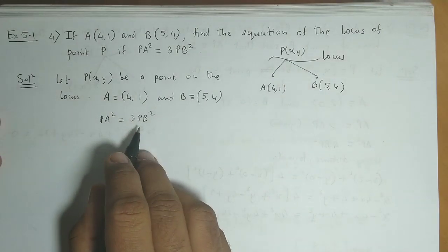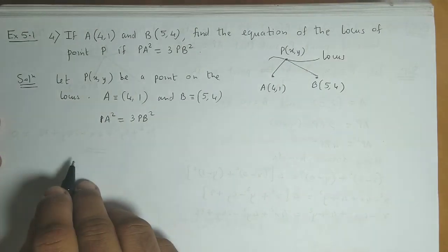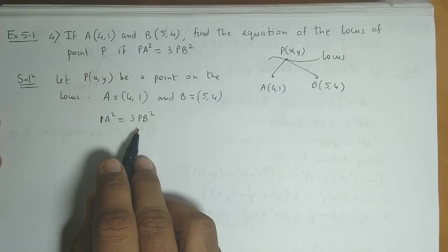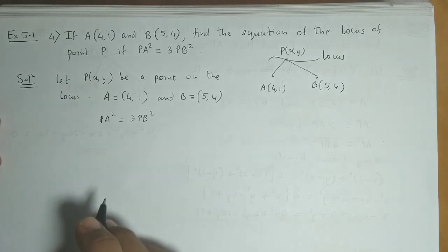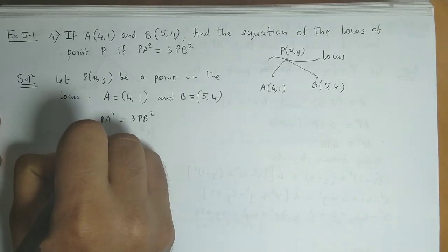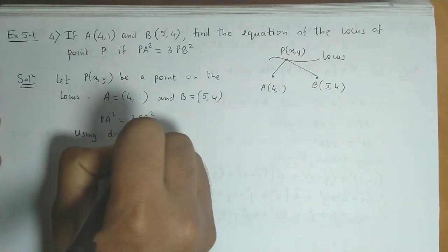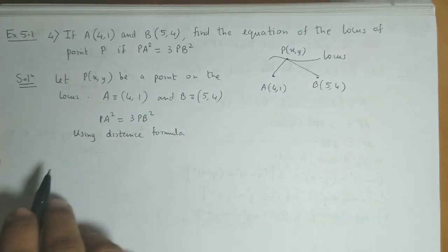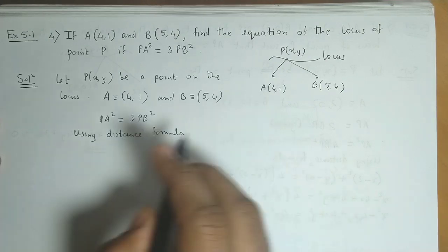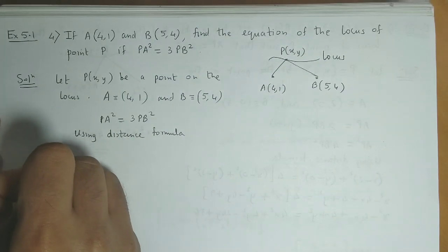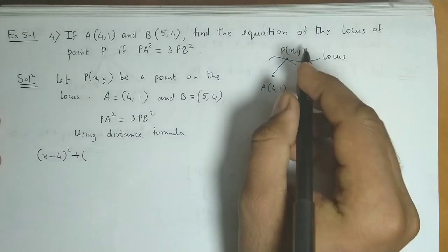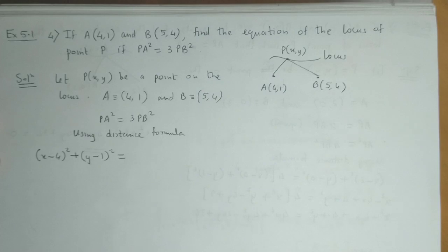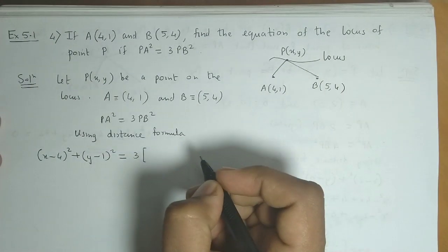So we use the distance formula, but without the square root. When we apply the distance formula, PA squared gives us x minus 4 the whole square plus y minus 1 the whole square, is equal to 3 times PB squared.